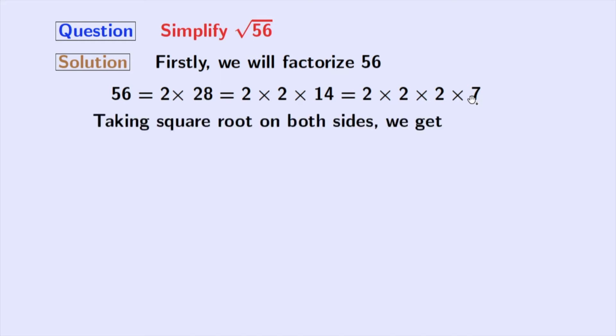Now, taking square root on both sides, we get square root of 56 is equal to square root of 2 times 2 times 2 times 7.